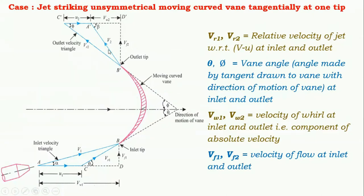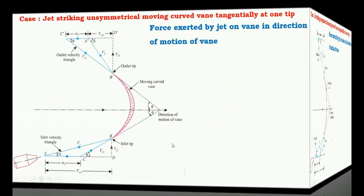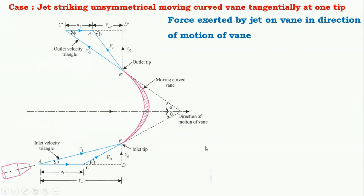The triangles ABD and B'C'D' are called the velocity triangles at inlet and outlet respectively. If the vane is smooth and having velocity in a direction of motion at inlet and outlet equal, then U1 is equal to U2, which are the velocities of vane in the direction of motion, and Vr1 is equal to Vr2.